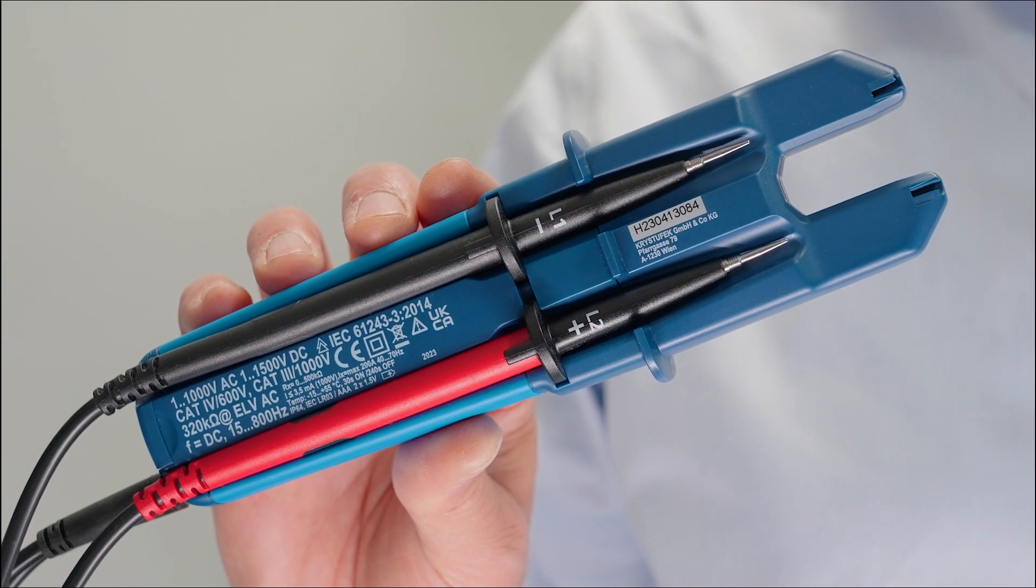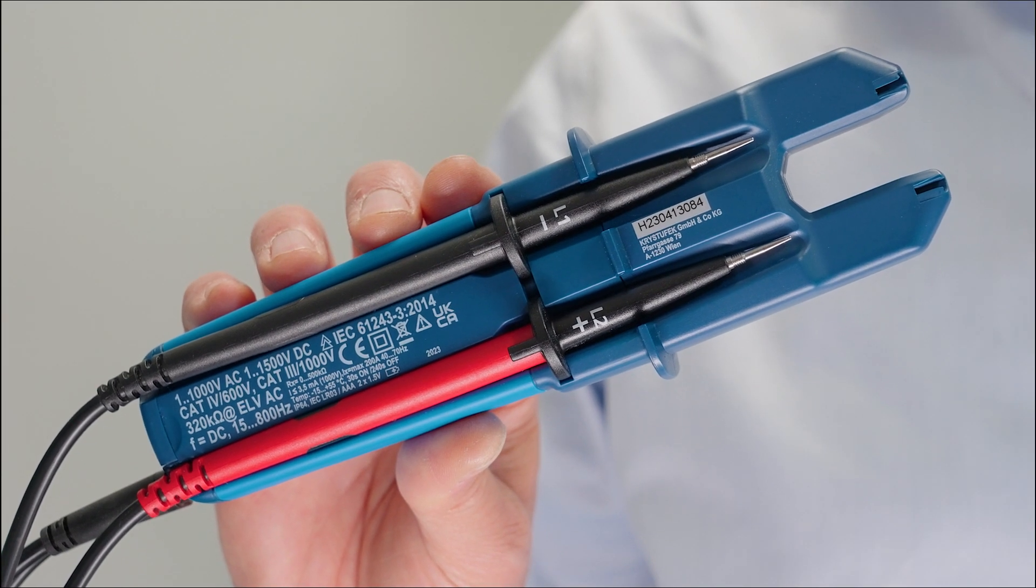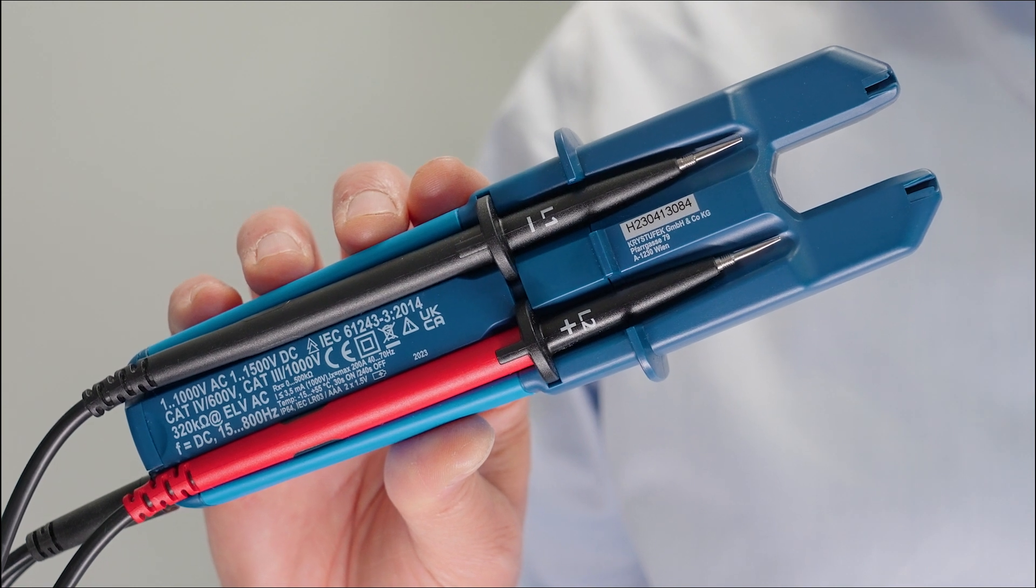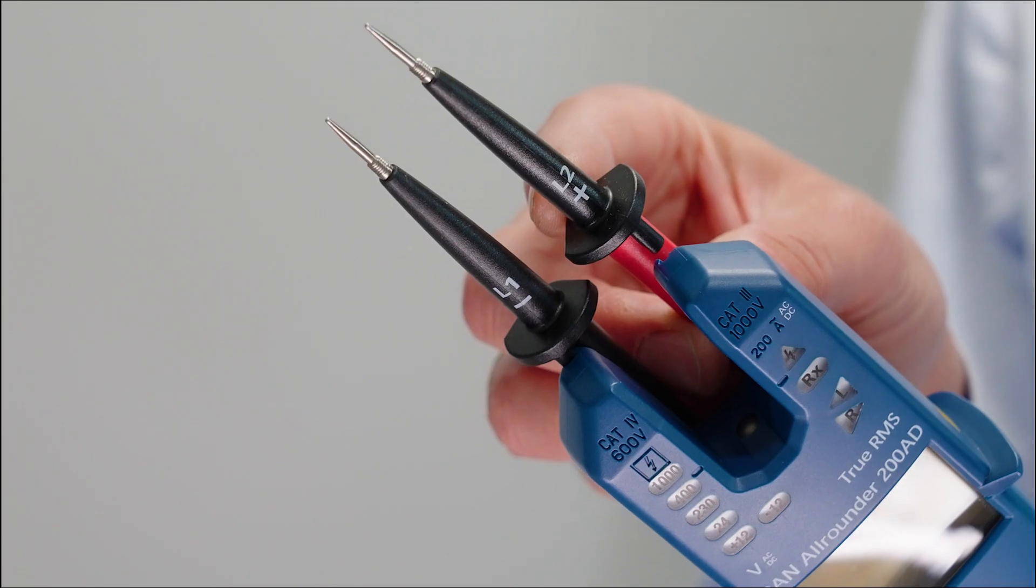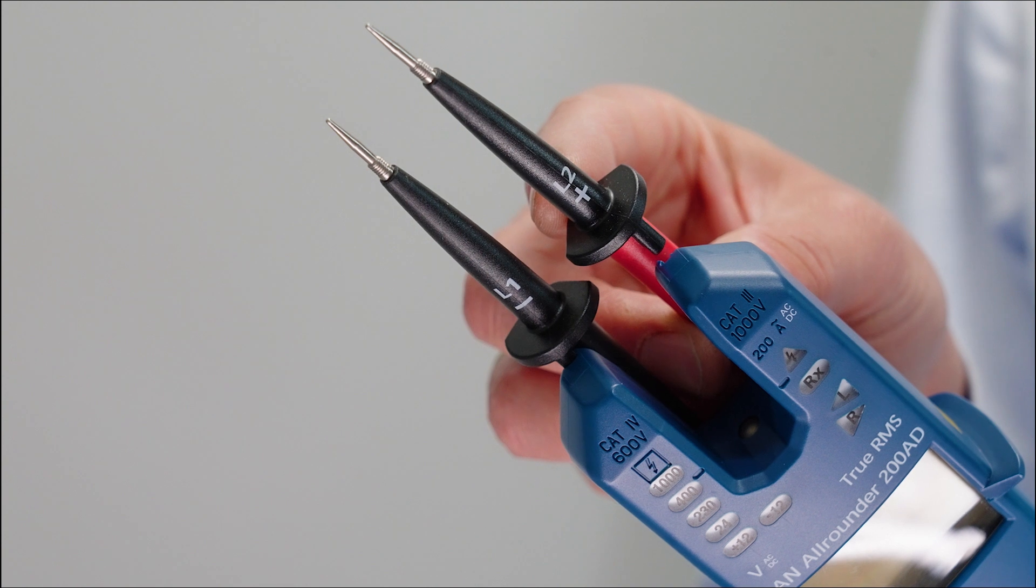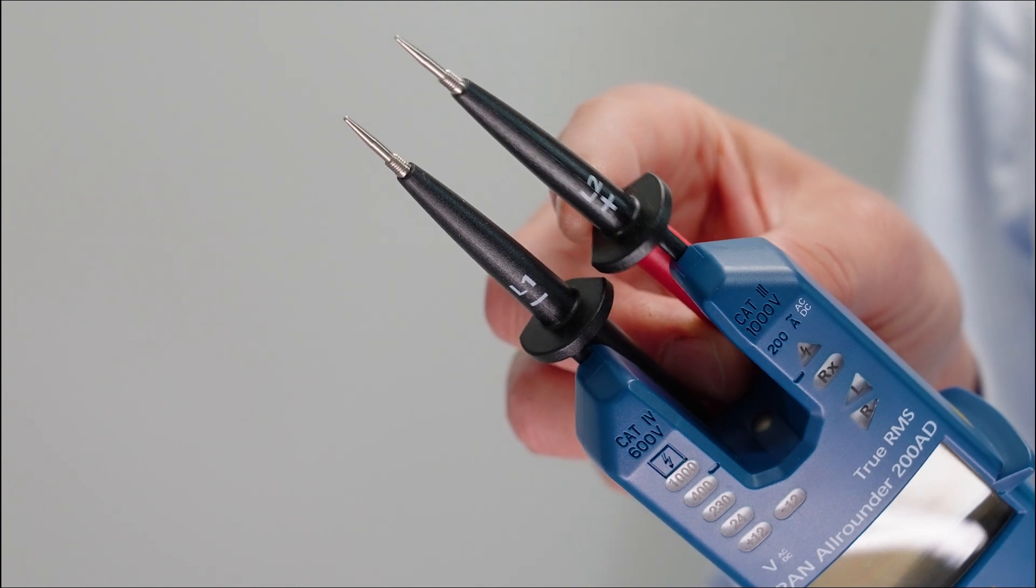When not in use, the test tips can be parked on the back side of the tester, keeping the compact shape and protecting the user from getting hurt. Either one or both test tips can be fixed on top of the tester.